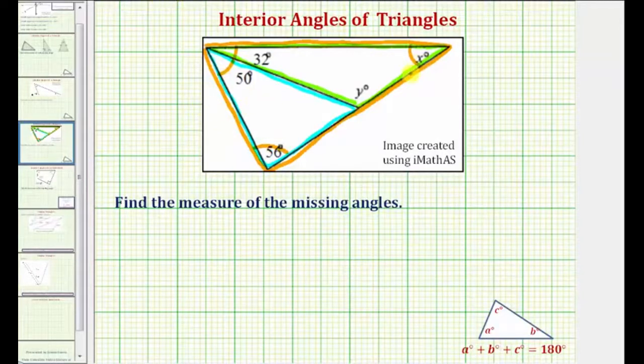So writing an equation we would have x plus 56 plus, for this third angle, we'd have the sum of 50 and 32, and this sum must equal 180.